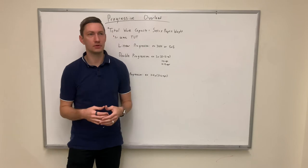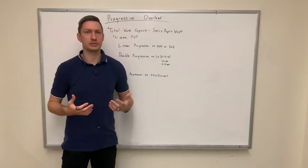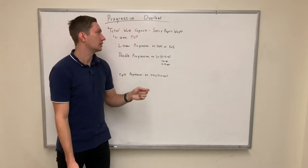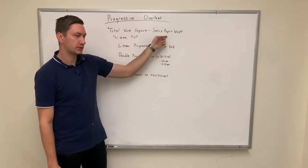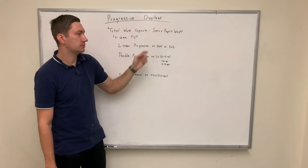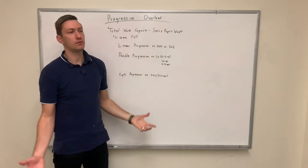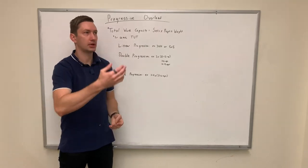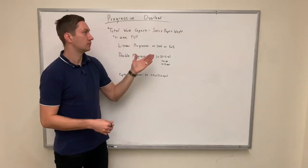And that's how you progressively overload. But really, to progressively overload, what we want to do is increase our total work capacity. And so it's not just the weight, but it can be the number of reps that you're doing or the number of sets. All of that will increase your total work capacity and, over time, help to move you forward in moving your weights.